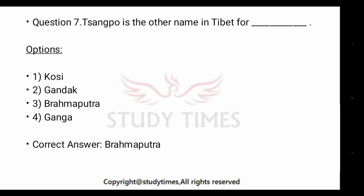Sanku is the other name in Tibet for dash — the other name of Brahmaputra is Sanku. The other name of Koshi is Sapt Koshi, which is one of the biggest tributaries of the Ganga. The Gandak river is also known as the Narayani river.